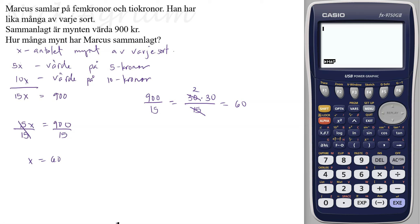Det betyder det finns sextio stycken av varje sort. Fem multiplicerat med sextio är ju trehundra, och tio kronor som är sextio stycken också är ju sexhundra, och tillsammans är ju niohundra kronor. Så x är lika med sextio stycken.